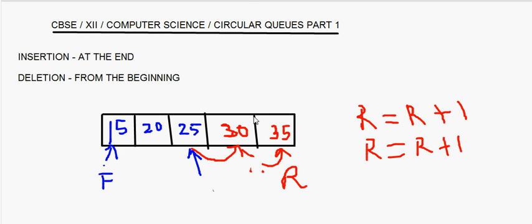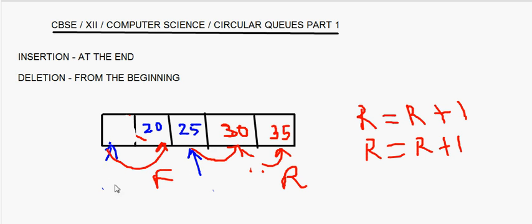Now let's say we delete an element from the queue. When you delete an element, the element that will be deleted is 15. When 15 gets deleted, this front will move from this place to the next place. So front comes here and this space from where you deleted becomes free. Your front is at this new place and rear is here. In a normal queue you cannot utilize this freed space, but in a circular queue you can utilize it.